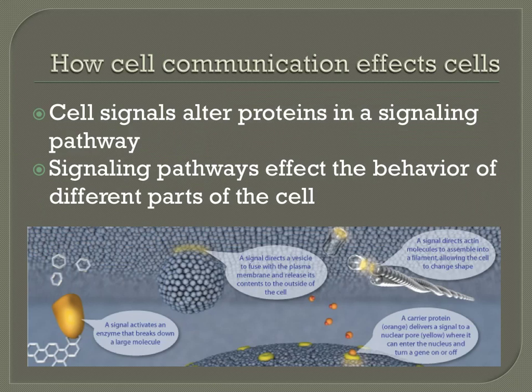Signals most often move through the cell by passing from protein to protein, each protein modifying the next in some particular way. Collectively, the proteins that relay a signal to its destination make up a signaling pathway. Once the signal reaches its target molecule, which is usually a protein, it works to change the behavior of the cell.